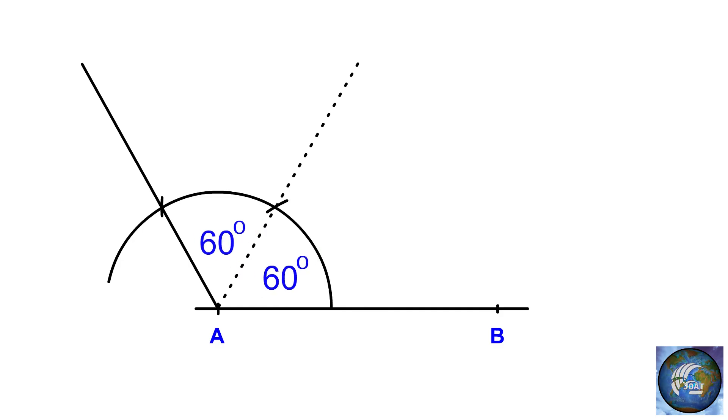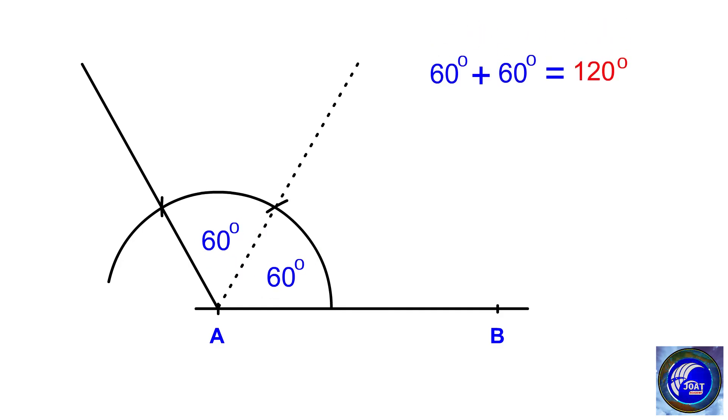Adding a 60 degree angle to another 60 degree angle will give you a 120 degree angle.